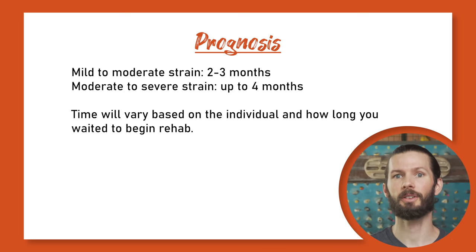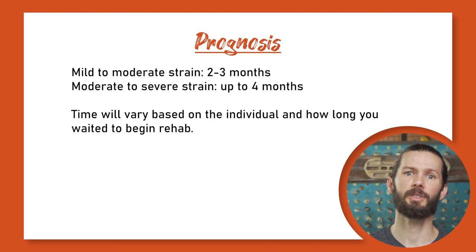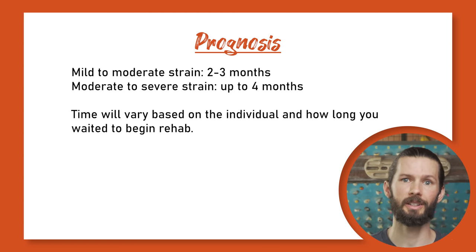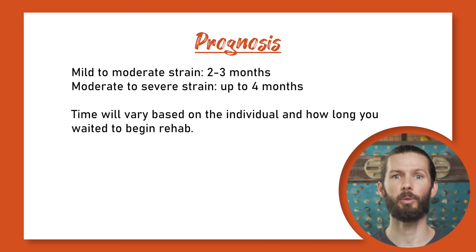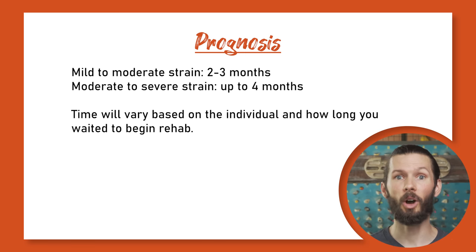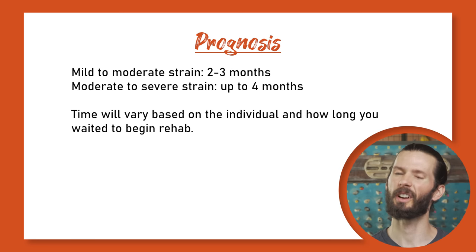The timeline to recover from an FDP injury will of course depend on the severity. If you follow a plan that removes aggravating factors and retrains the tissue, a mild to moderate strain will heal in about two to three months, while a moderate to severe strain could take up to four months. Individual timelines will vary slightly.